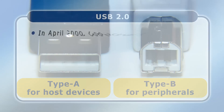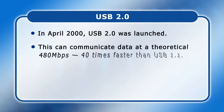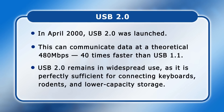In April 2000, USB 2.0 was launched. This can communicate data at a theoretical 480 megabits per second, or 40 times faster than USB 1.1. Today USB 2.0 remains in widespread use, as the standard is perfectly sufficient for connecting hardware that includes keyboards, mice, and lower-capacity storage devices. We therefore still find Type A USB 2.0 ports on most new desktop PC motherboards.